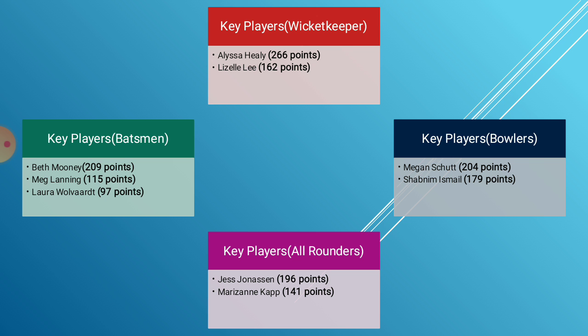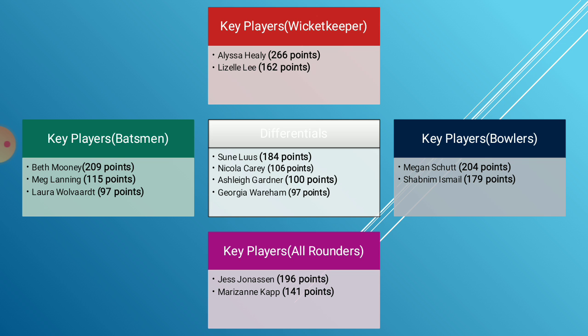In the all-rounder section, Jess Jonassen has been the most consistent and economical bowler for Australia in the World Cup, and her left-arm orthodox spin should play a big role on a pitch that assists spinners. Marizane Cap is a solid all-rounder for South Africa who can play a pivotal role in the middle order, and she is preferred ahead of Dane van Niekerk, who has been a little out of touch with the bat and whose credits are quite high. Apart from the key players, we have also listed out some differential players — Sonali, Nicola Carey, Ashley Gardner and Georgie Abraham — who may not be in most fantasy teams but could give your team an edge if they click.